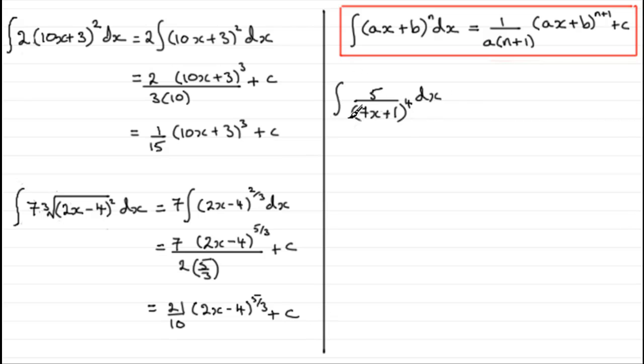What about this one here? Well, with this one, I'd want to pull out the 5 to the front of the integral. And then I have 1/(7x + 1)⁴ integrated with respect to x. Now, 1/(7x + 1)⁴ can be written as the integral of (7x + 1)^(-4) integrated with respect to x.